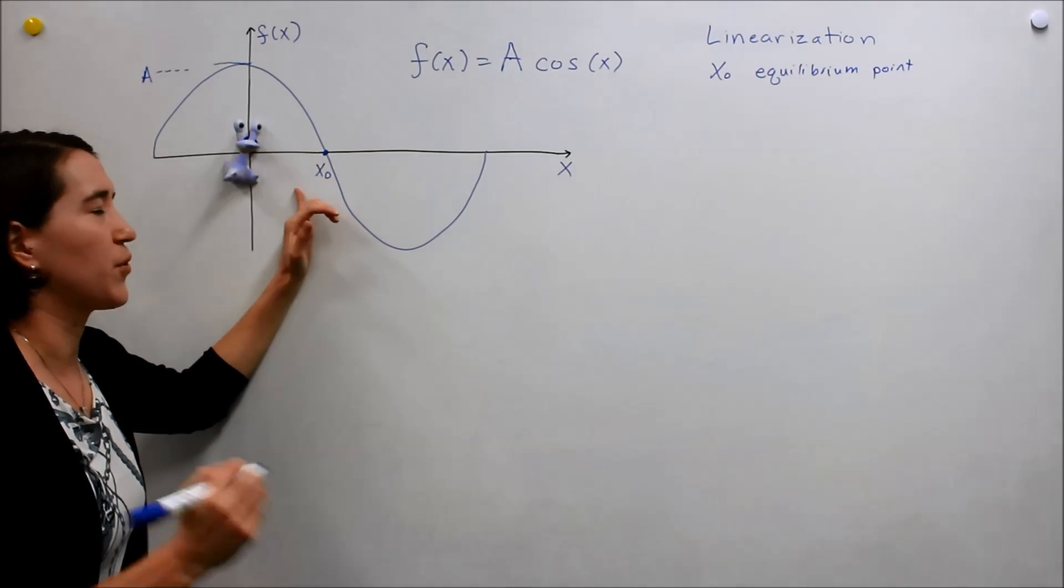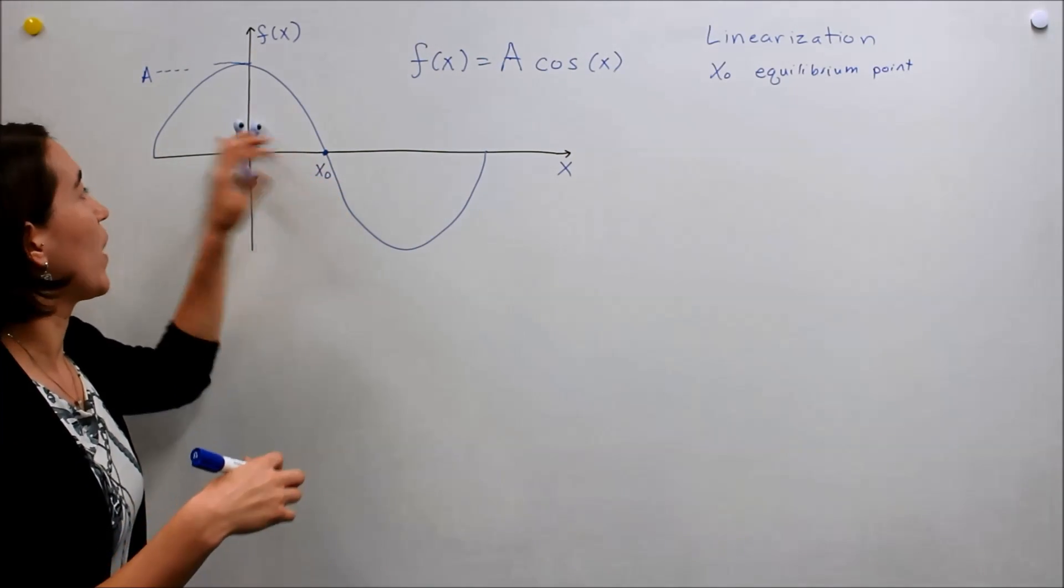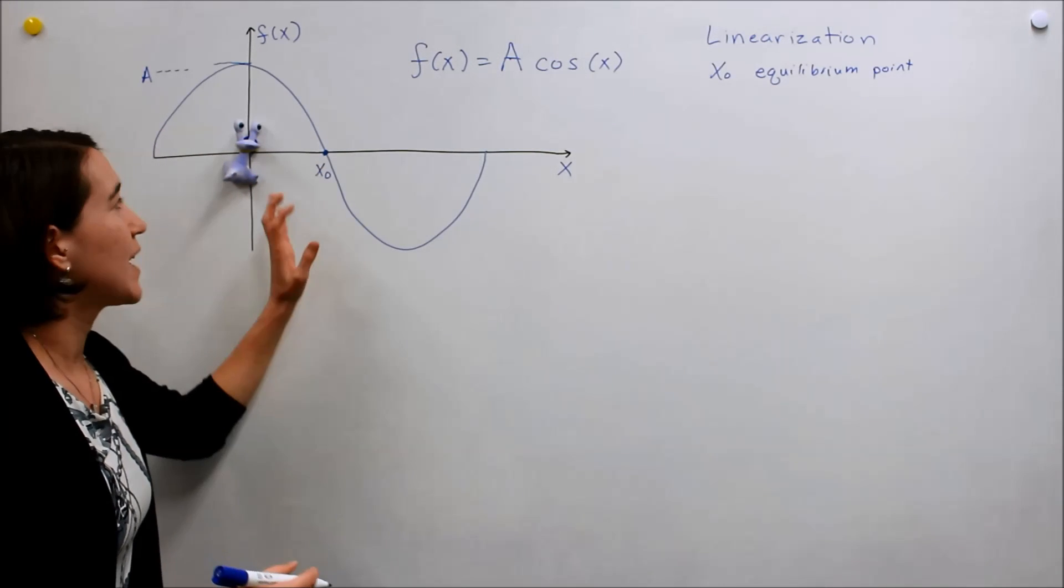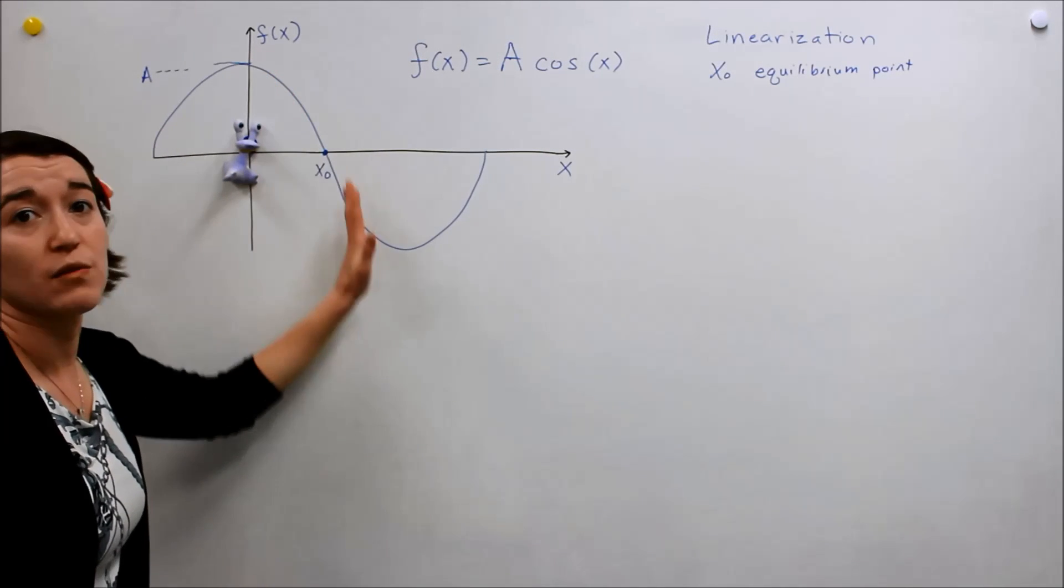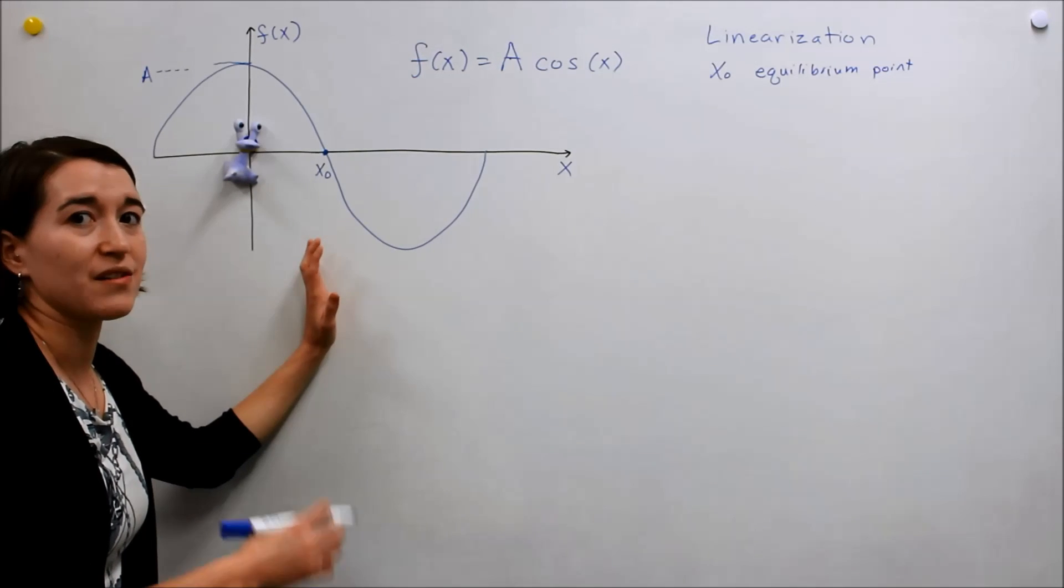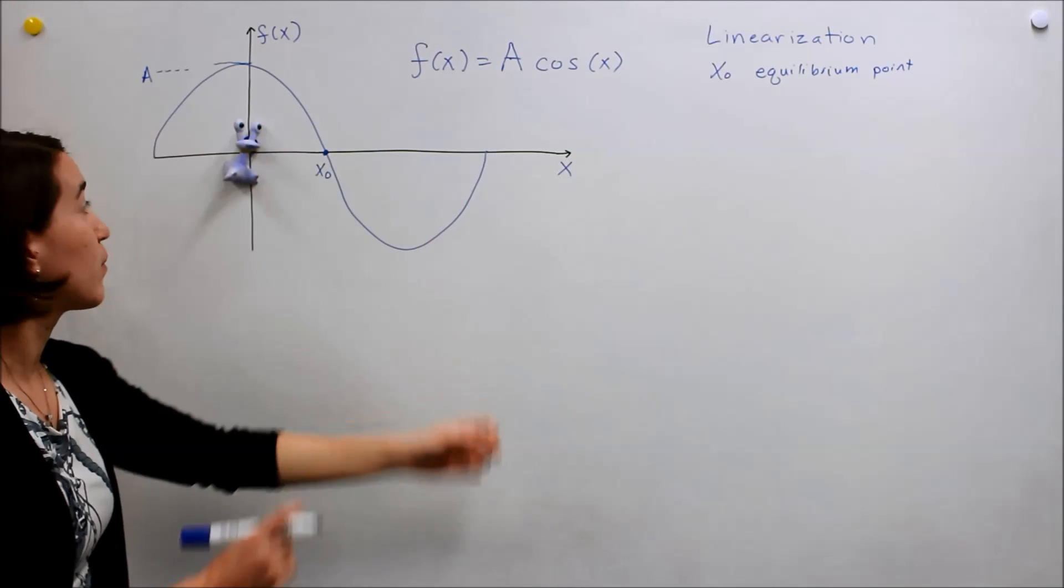When we do controls, we're going to pick that to be where our function is equal to zero. Technically you could linearize around any point, but we will usually linearize around zero. So it's called the equilibrium point.